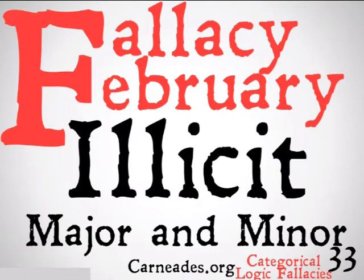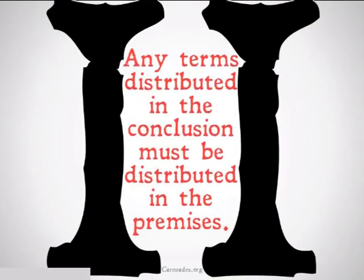These are going to be fallacies for the second rule of categorical syllogisms. That second rule we remember is that any terms distributed in the conclusion must be distributed in the premises.